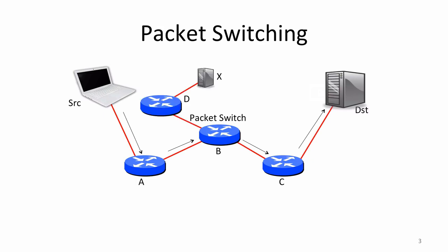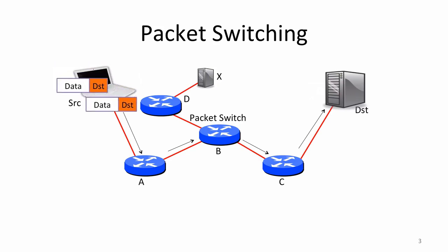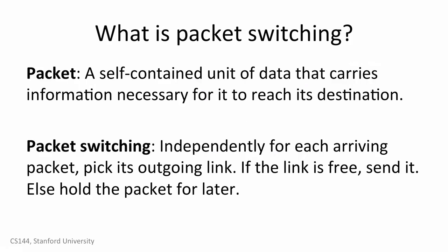For example, let's say there's another switch connected to B, called D. Immediately after sending a packet to C, B can send the next packet to D. Or if the next packet were also to the destination, it would send two packets back-to-back to C. Here's a simple definition of packet switching: independently, for each arriving packet, we pick its outgoing link. If the link is free, we send it. Else we hold the packet for later.